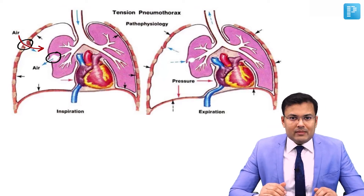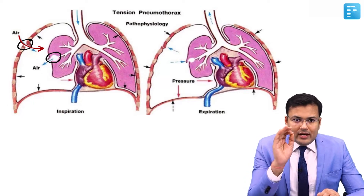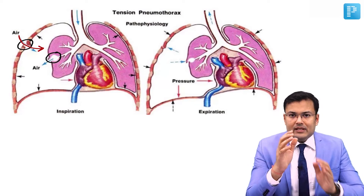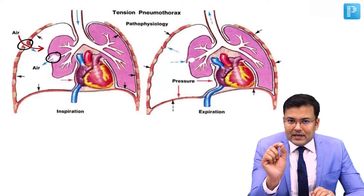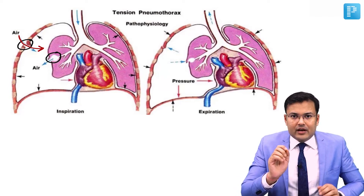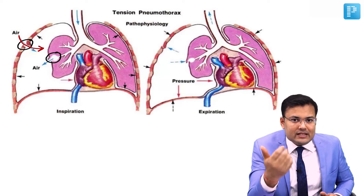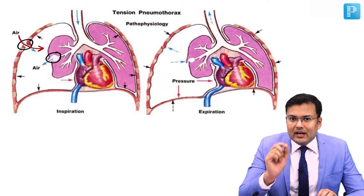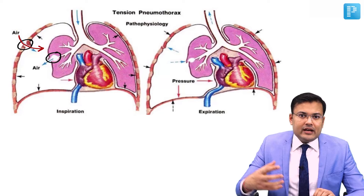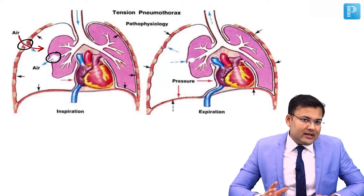With penetrating trauma to the lungs or tracheobronchial injury, consider the balloon analogy: if you puncture a deflated balloon and then inflate it, the puncture site enlarges. Similarly, during inspiration when the lung expands, the injury site enlarges causing air leak. During expiration, the air cannot escape, so air is forced into the thoracic cavity and collected under tension.